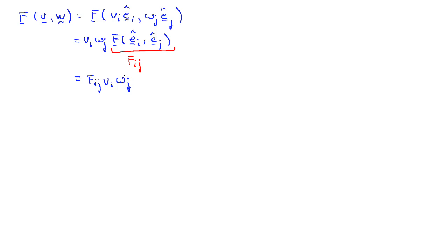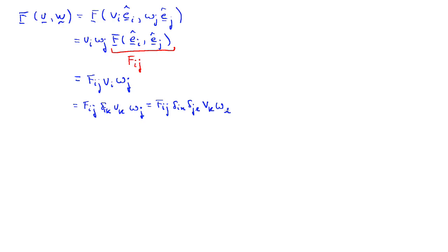Now I'll play a couple of tricks. I have a contraction on i and a contraction on j. For the contraction on i, I rewrite it introducing the Kronecker delta δ_{ik}, so f_{ij} δ_{ik} v_k w_j. I only get something when i equals k, so the two lines are equivalent. I do the same with j: f_{ij} δ_{ik} δ_{jl} v_k w_l. Now I observe that δ_{ik} = ê_i · ê_k and similarly δ_{jl} = ê_j · ê_l.